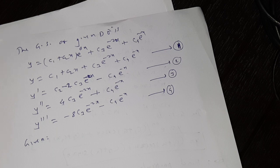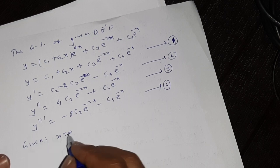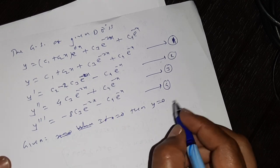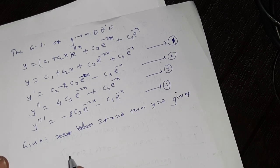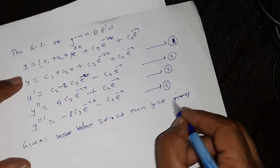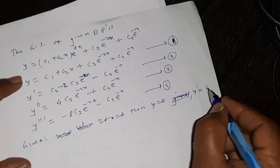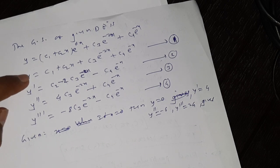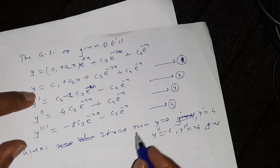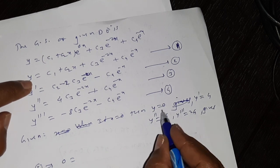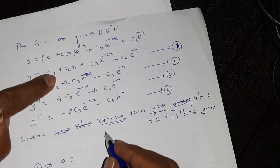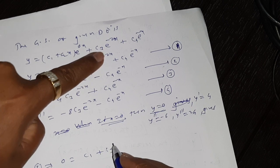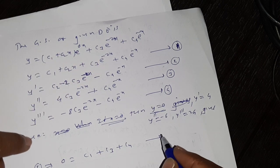The given conditions are: when x=0, y=0; y'=4; y''=-6; y'''=24. Substituting x=0 into equation 1 with y=0 gives: c1 + c3·e^0 + c4·e^0 = 0, that is c1 + c3 + c4 = 0. Suppose this is equation number 5.